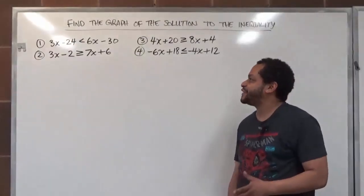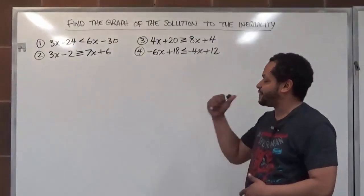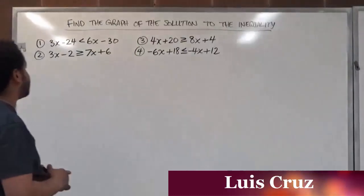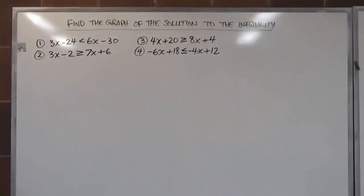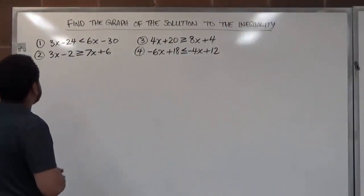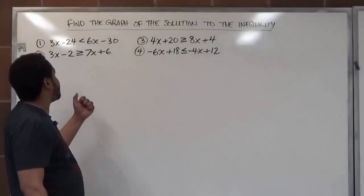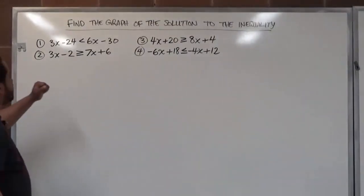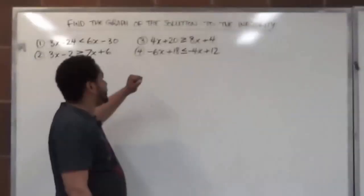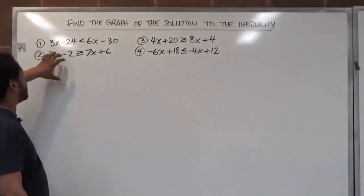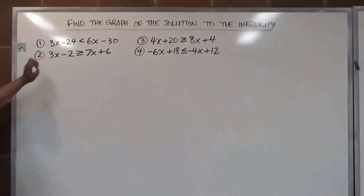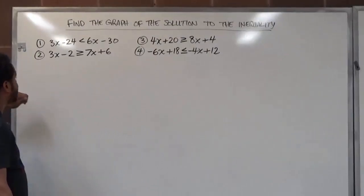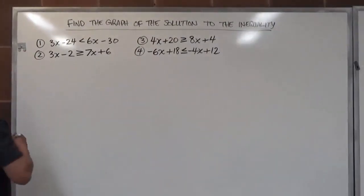Welcome to HelpYourMath.com. In today's video, we're going to find a graph for the solution to the inequalities given here. We have four inequalities — some are two-step problems and some are three-step problems. For each of them, after we get the solution to the inequality, we're going to use that solution to graph the inequality on the number line. Let's begin with problem number one.